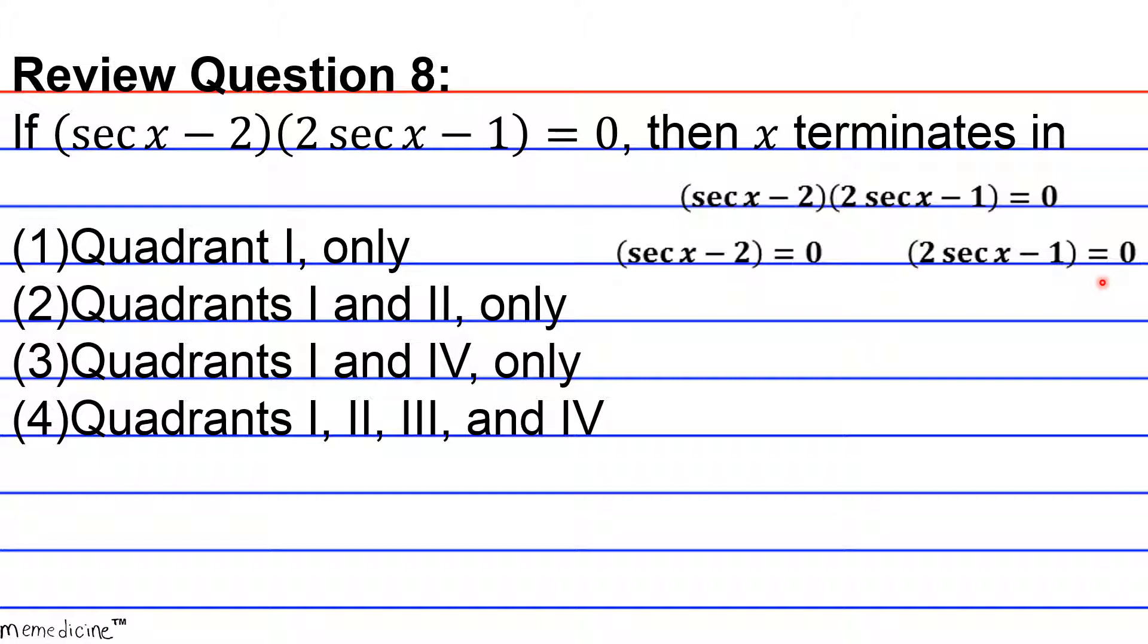Okay, and the zero product property simply states that if a times b is equivalent to 0, then a equals 0 or b equals 0 or both equals 0. Okay, because a product of factors is going to be equivalent to 0 if and only if one or more of the factors is equivalent to 0. So whenever you factor in this manner, you're always exercising the zero product property. All right, that was a little aside. Let's continue.